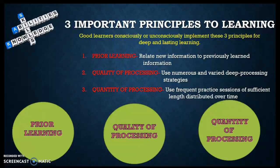Quality of processing is utilizing different learning avenues — different tools to develop deep learning. And then finally, quantity of processing is frequent practice over a course of time, not cramming the information in the night before a test. So again: prior learning, quality of processing, and quantity of processing.